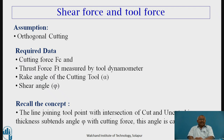Many times, the shear angle is not given. Instead, chip thickness before cut and chip thickness after cut are given. Chip thickness before cut is denoted by T and chip thickness after cut by Tc. From these, we can calculate the chip thickness ratio r, which equals T divided by Tc. Once we know r, we can calculate shear angle phi by the formula: phi equals tan inverse of (r cos alpha) divided by (1 minus r sin alpha).